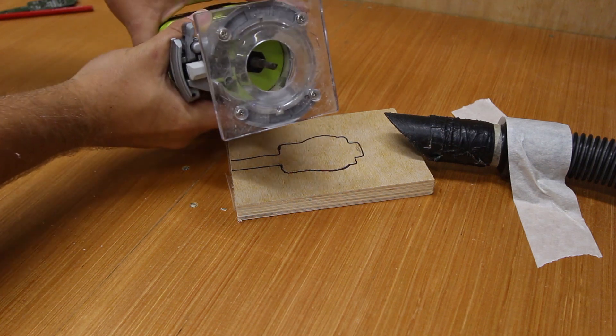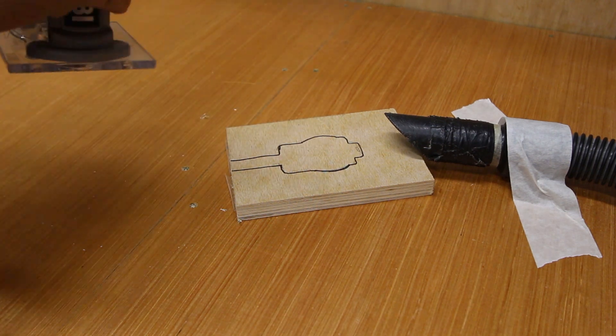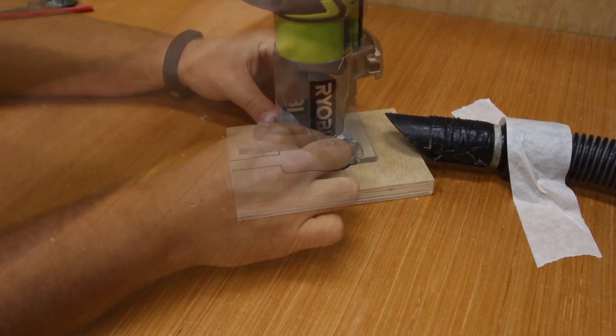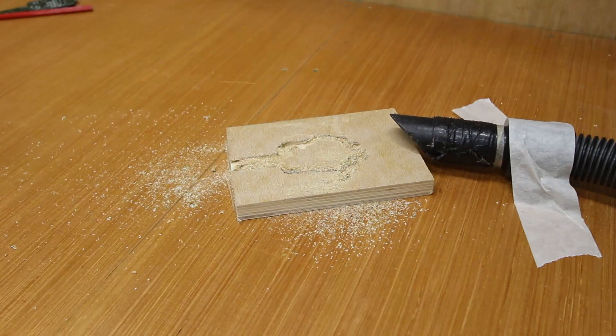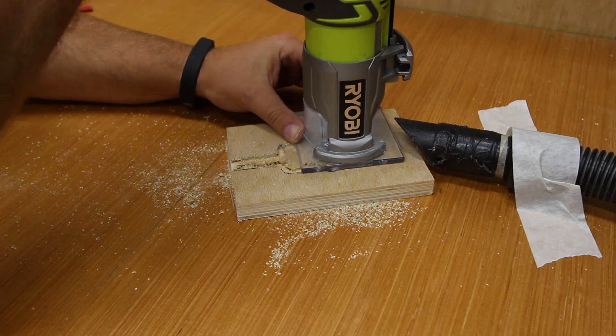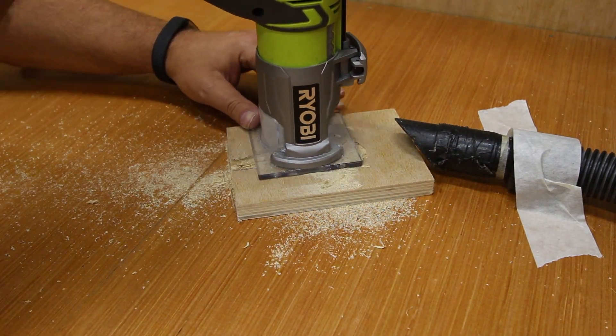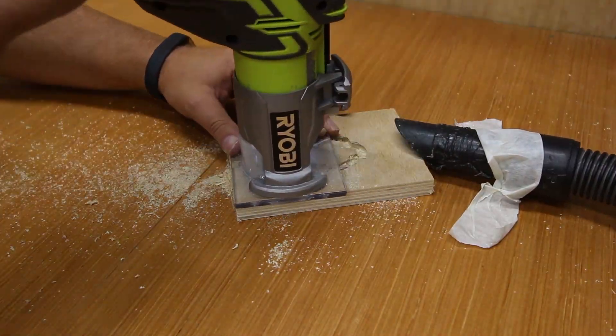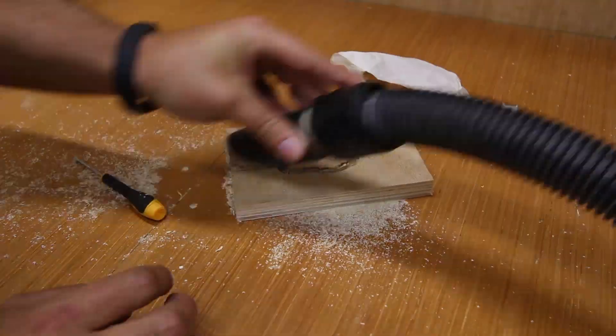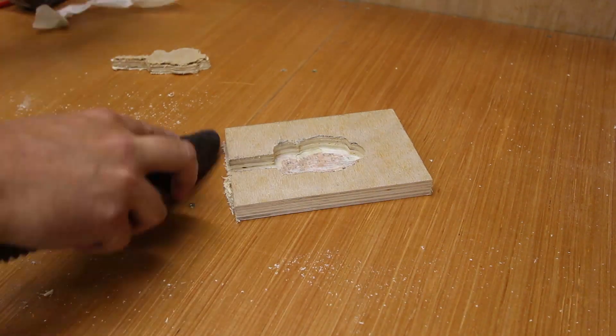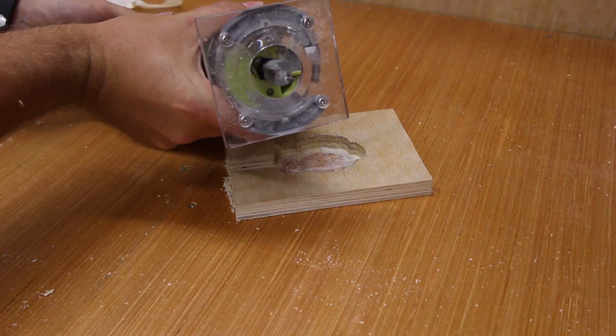I'm starting with a thin bit to cut the outline. I'll take several passes to get the correct depth. Once done, the middle piece should pop out and I will then use a wider bit to flatten the base where the charging ring sits.